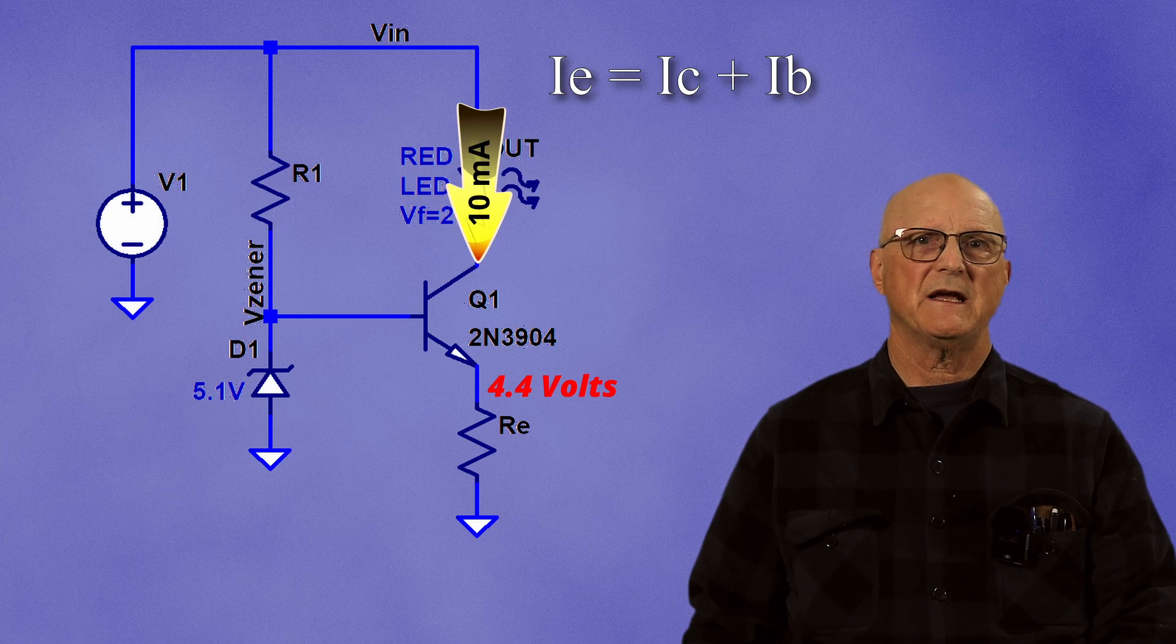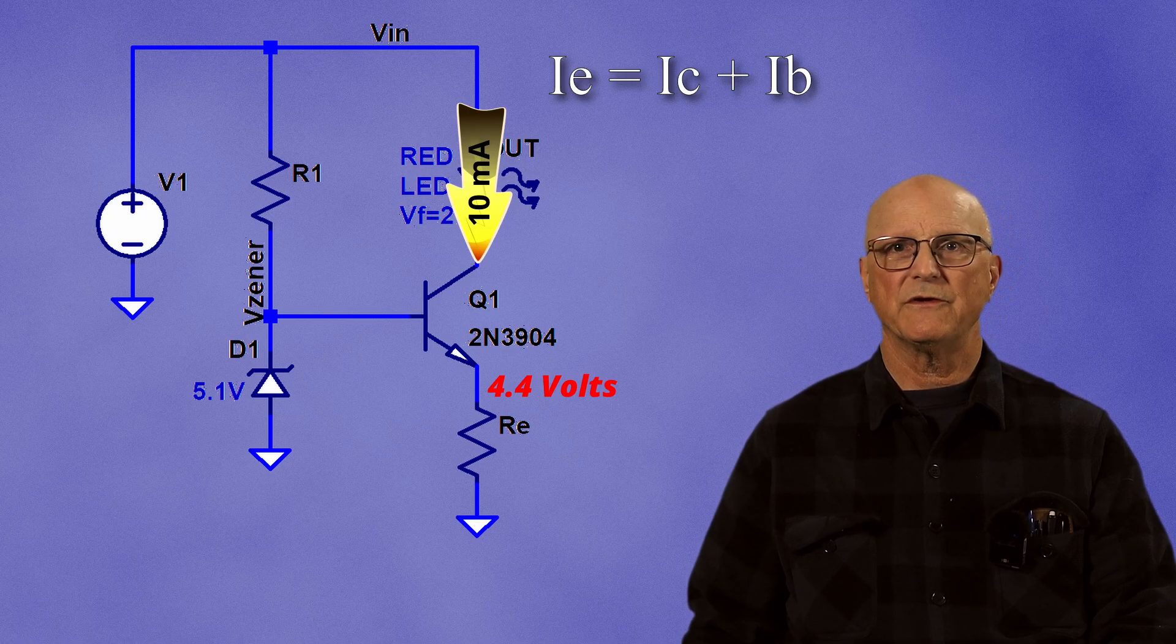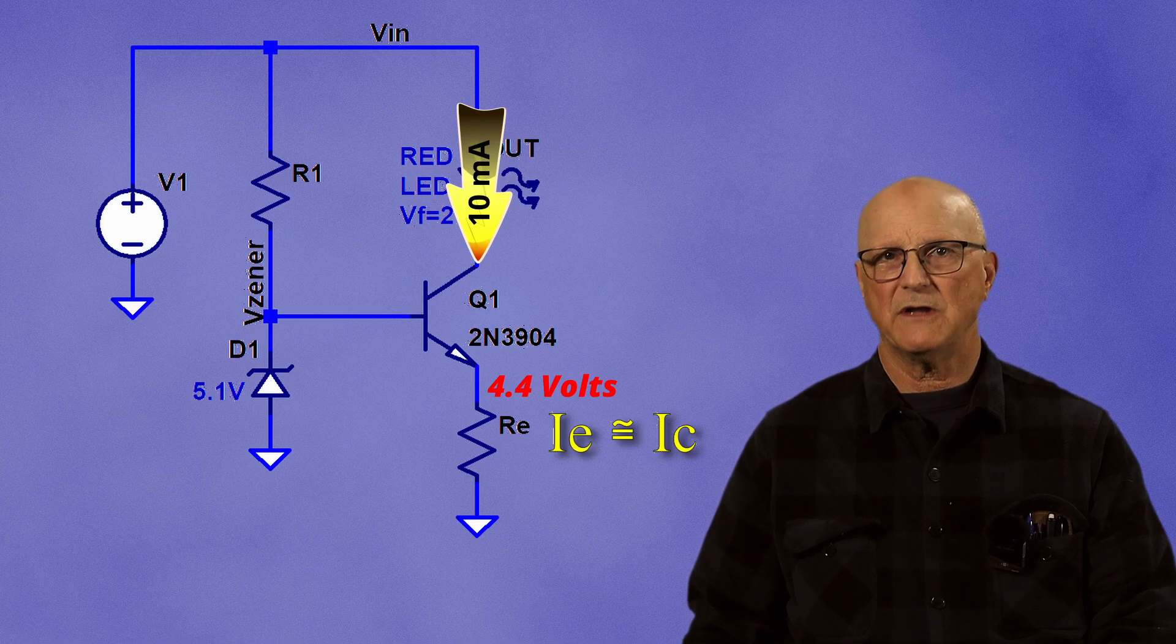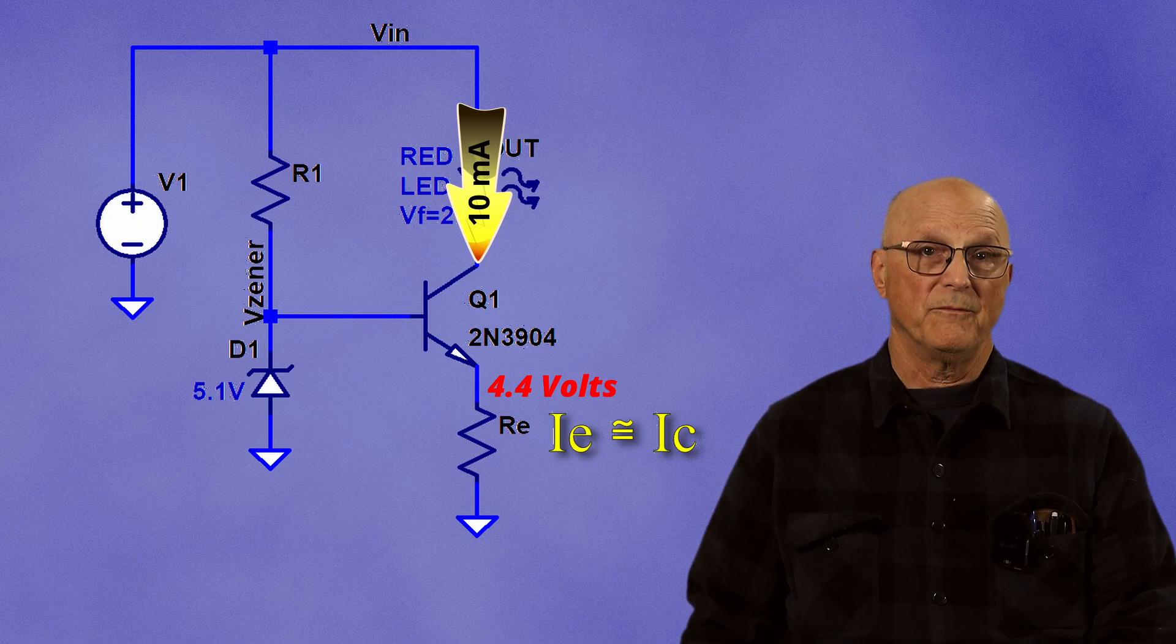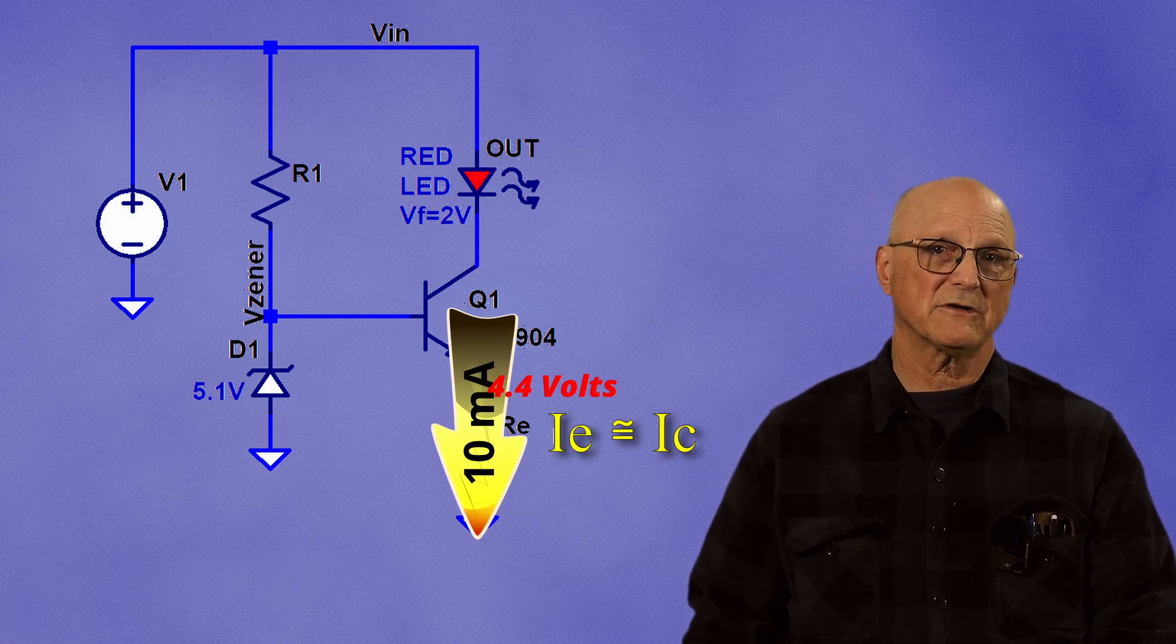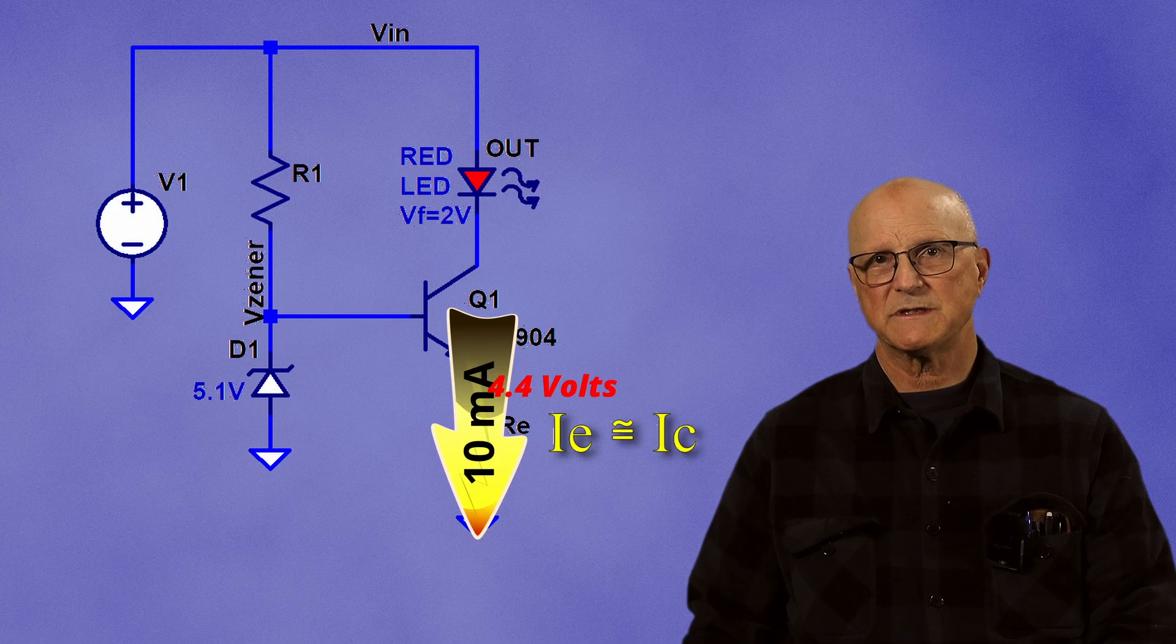For the sake of this quick video, I will assume that the emitter current is essentially the same as the collector current. So the emitter current is approximately equal to 10 milliamps because our target collector current is 10 milliamps.